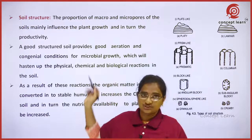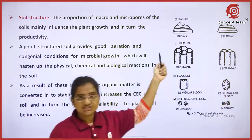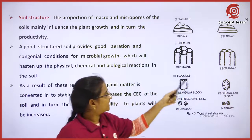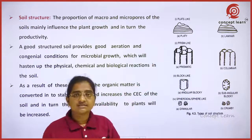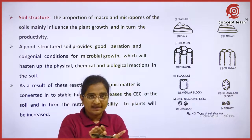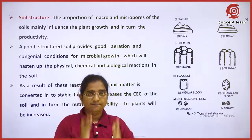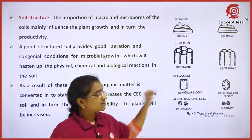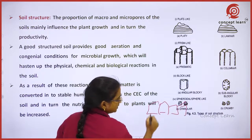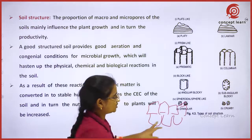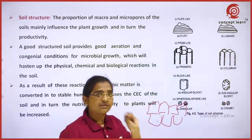Different types of soil structures are there: platy structure, prismatic, blocky, crumby, etc. In platy structure, the particles are arranged like a plate. In prismatic structure, they arrange like a column. In block structure, they arrange like hexagonal blocks. In spheroidal structure, we have crumby and granular types.